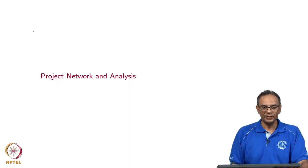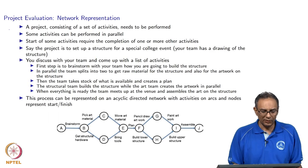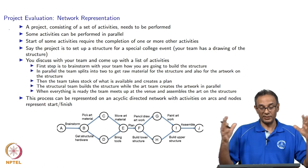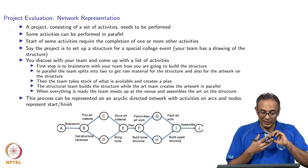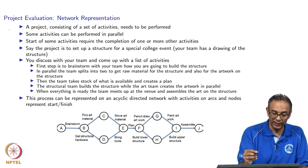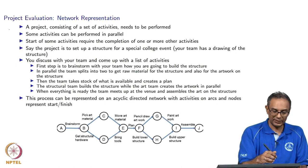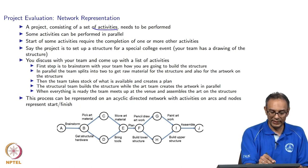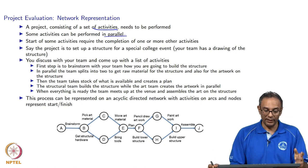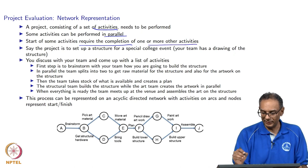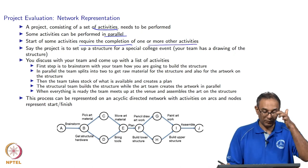The last item in this topic is project network and analysis. Here we have a network representation of a project. A project typically consists of several steps — some activities can be performed in series, some can be performed in parallel. This project has a bunch of activities; some can be done in parallel whereas some need to be completed before starting others. I will try to explain that with an example shortly.